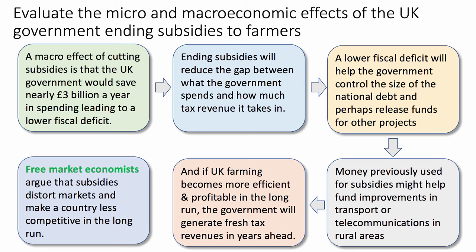Now for the macro point — at least one point must be macro. Cutting subsidies would save the government nearly £3 billion a year in spending, leading to a lower fiscal deficit. A lower fiscal deficit helps the government control the size of the national debt and could release funds for other projects, such as improving telecommunications or road networks in rural areas. If UK farming becomes more efficient and profitable in the long run, the government will also receive more tax revenue. Free-market economists argue that subsidies distort markets and ultimately make a country less competitive.